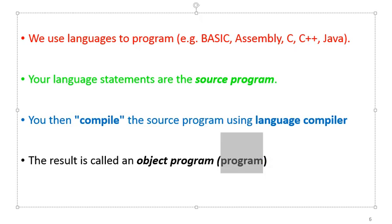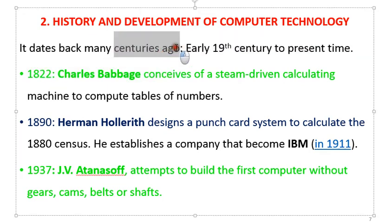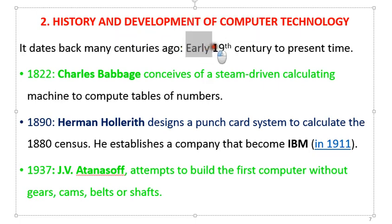So ladies and gentlemen, this is a brief definition of what a computer is and other aspects related to it. Our next aspect, item number two in our 14-point agenda, is the history and development of the computer. In reality, the development of computers started many centuries ago, with different people making different attempts to produce what can be called a computer. Our discussion will be within the early 19th century to our present time.